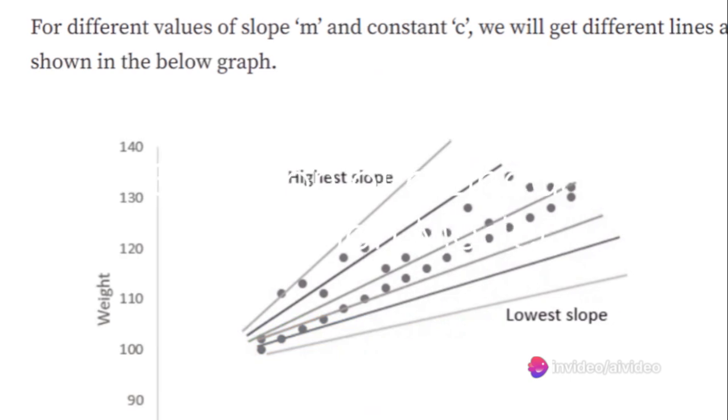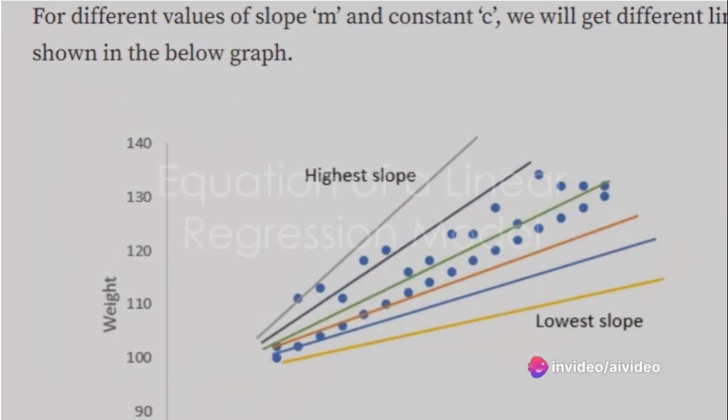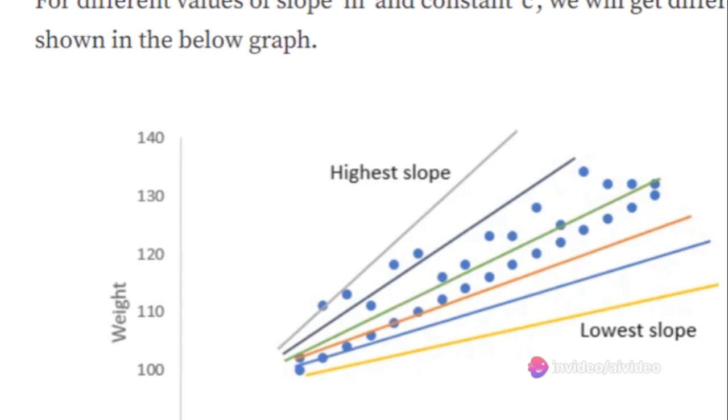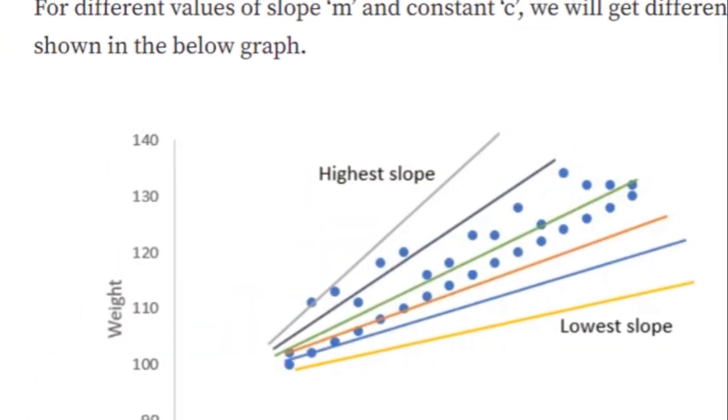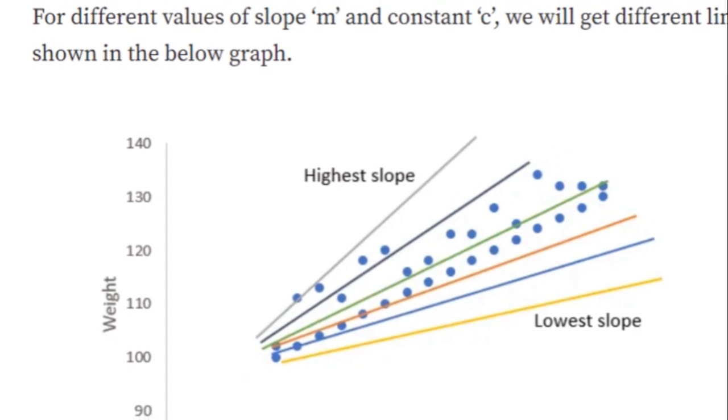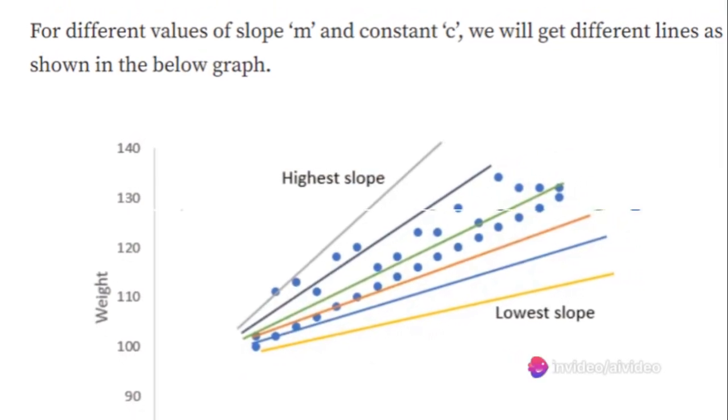The equation of a simple linear regression model is as follows: Y equals M times X plus C. Here, Y represents the output feature (weight), M is the slope of the line, X is the input feature (height), and C is the intercept.